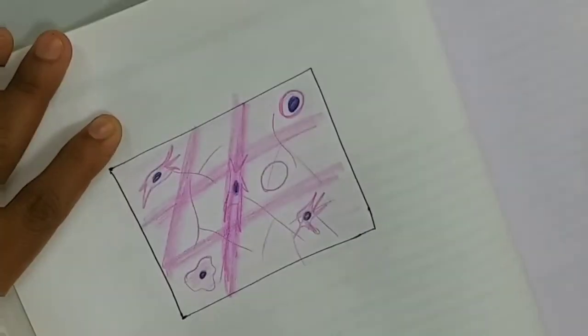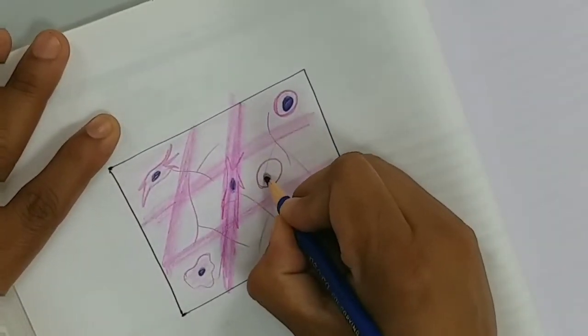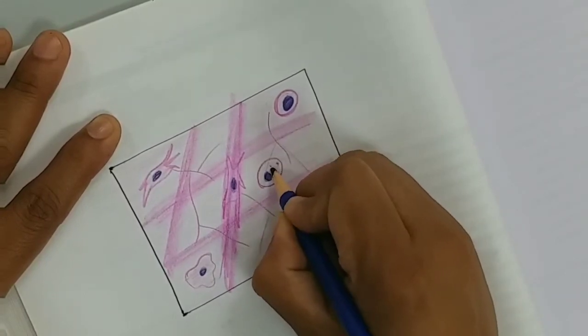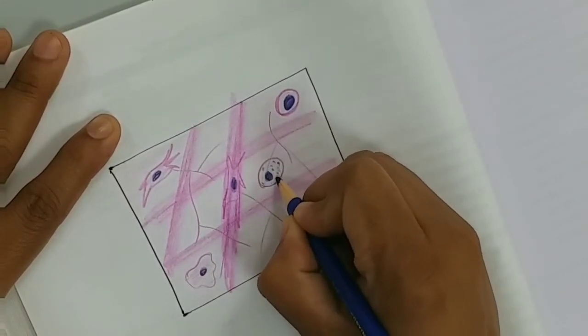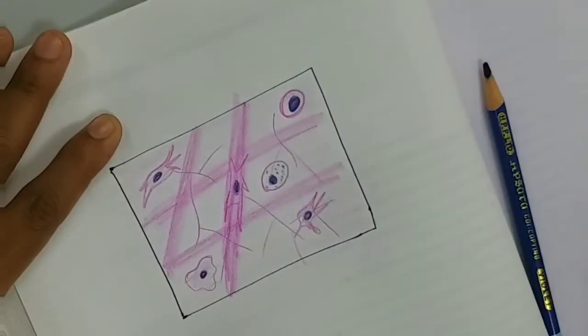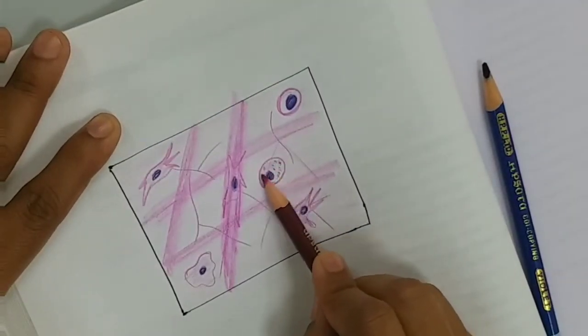Mast cell has eccentrically placed nucleus and basophilic granules. It releases histamine and heparin.